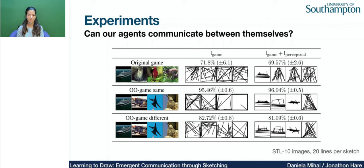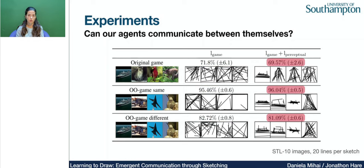We performed a large number of experiments, highlighting the main research questions and findings here. First, can our agents communicate between themselves? We show results based on STL10 images, with agents trained in the three different game settings. When using only the game loss, agents can successfully communicate, but the sketches produced do not resemble anything meaningful to a human. When introducing the perceptual loss, sketches start to resemble the input photographs, and this does not come at the cost of the agent's communication success rate.